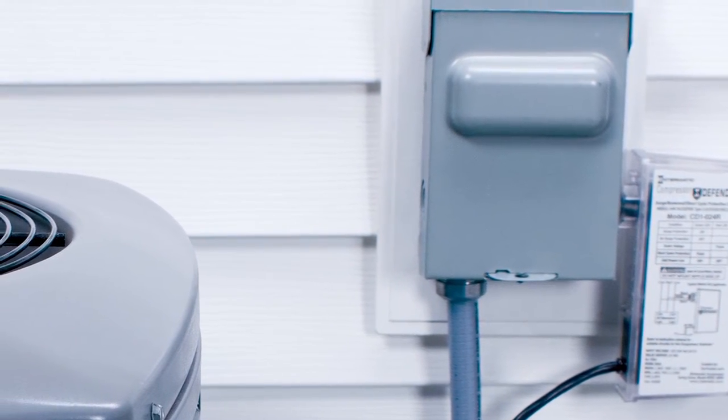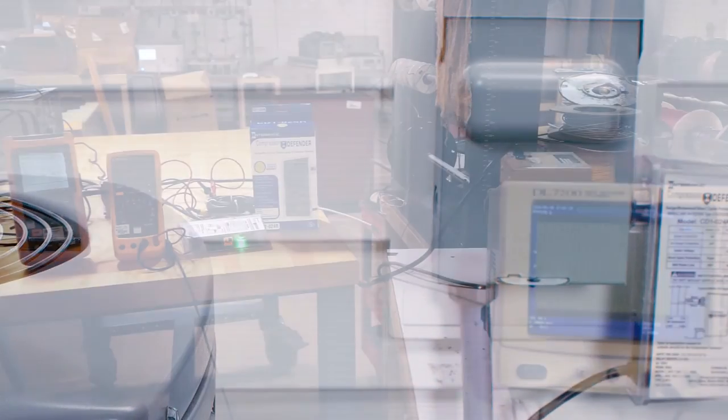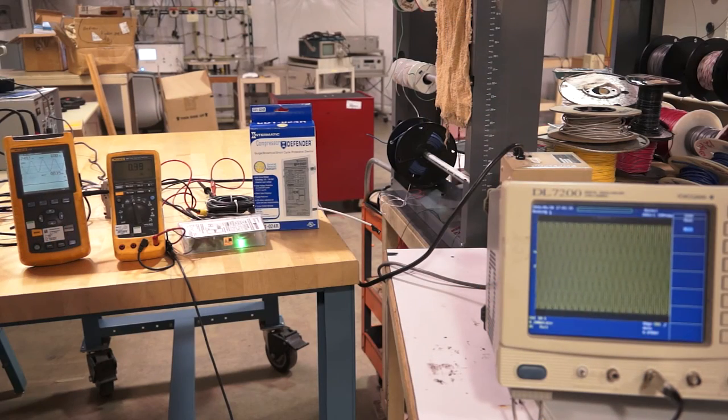The compressor defender will react to a power disruption or under voltage circumstance almost immediately. This demonstration will simulate a power disruption equaling three line cycles, which is just under one tenth of a second on a 240 volt 60 hertz application.